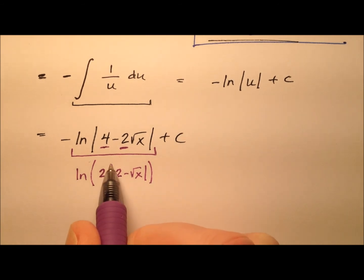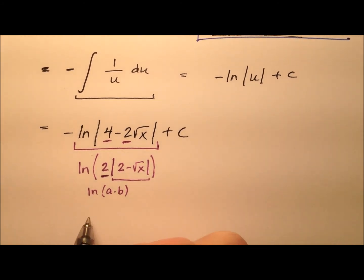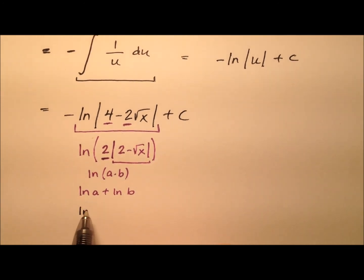Which means I have the natural log of a times b. This 2 out front is my a and this absolute value is my b. So I could expand that and rewrite that as the natural log of a plus the natural log of b. And the reason I might do that is because then I have the natural log of 2 plus the natural log of the absolute value.